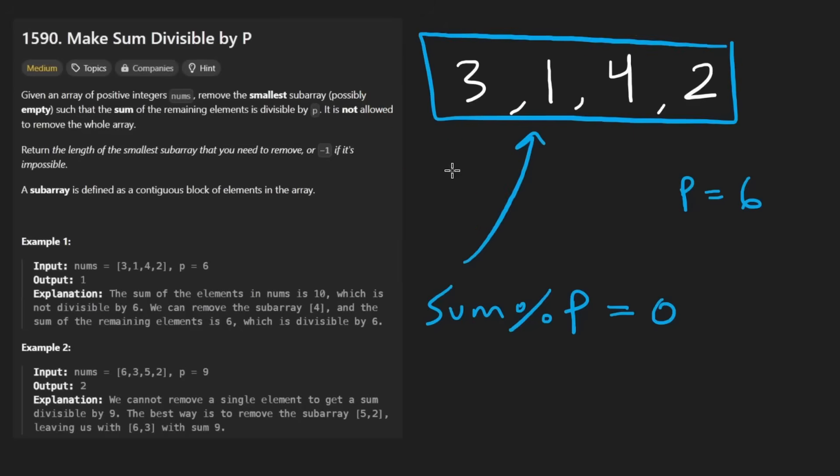But when we remove elements, we do so contiguously. You can't take multiple separate elements that aren't connected. We can only take one contiguous subarray from the input and remove it. We would of course take the remainder, see if it's divisible by P, and we want to remove the smallest possible subarray from the input. There could be multiple solutions. We want to remove the smallest possible subarray. Now in case there are multiple ways to do that, if there's a tie, it's okay because all we want to do is return the length of the subarray that we have to remove in order to make the rest divisible by P.